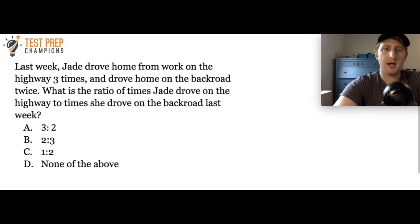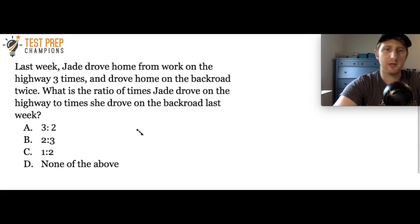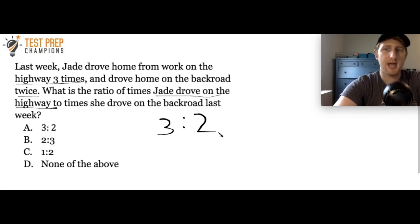One tip: when you have multiple choice answers for ratio questions, first glance at the answer choices to see if your answer needs to be written as a fraction or with a colon. Here the answer choices are written with colons. Since Jade drove on the highway three times, we put 3 first; she drove on the back road twice, so we put 2. The answer is 3:2, which is answer A.